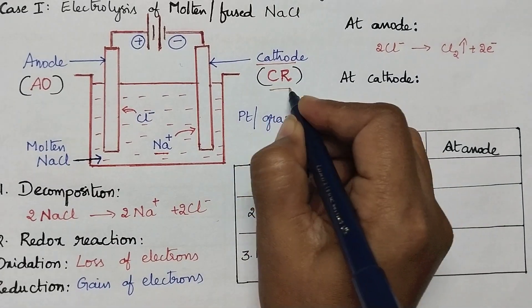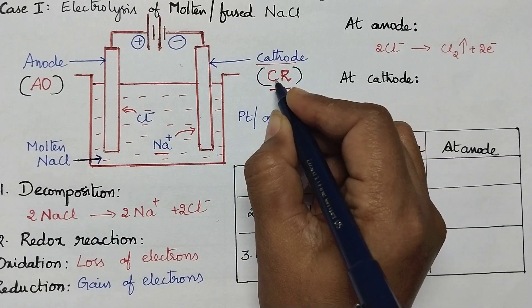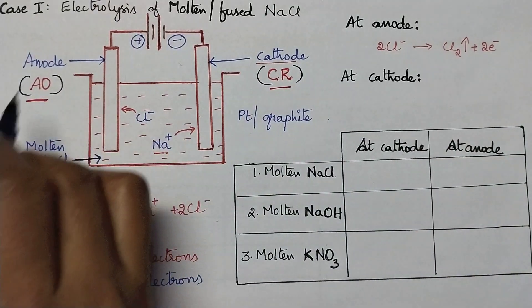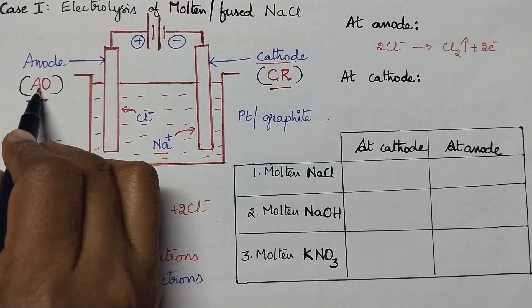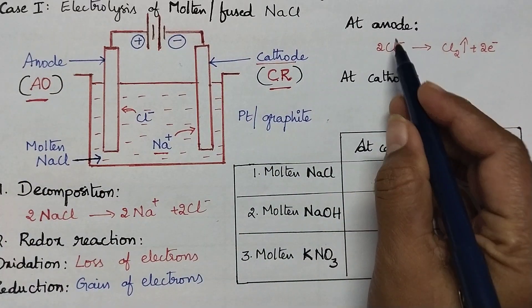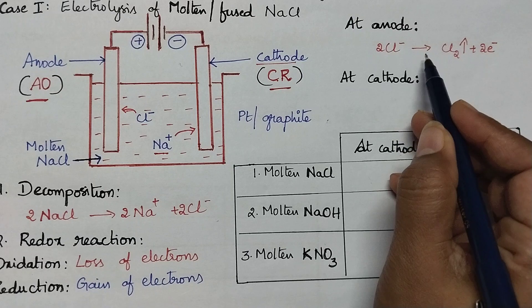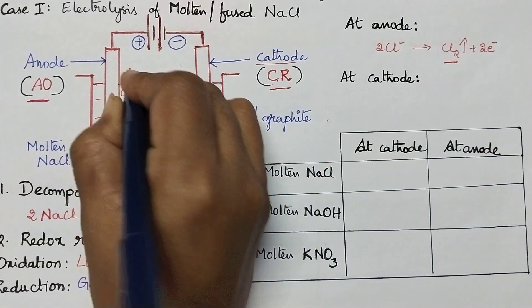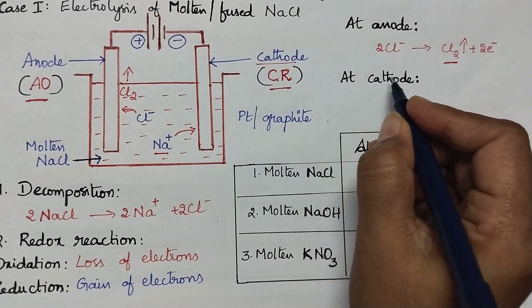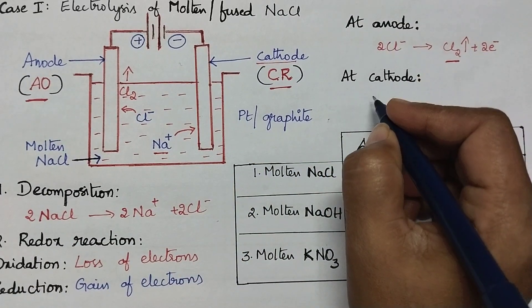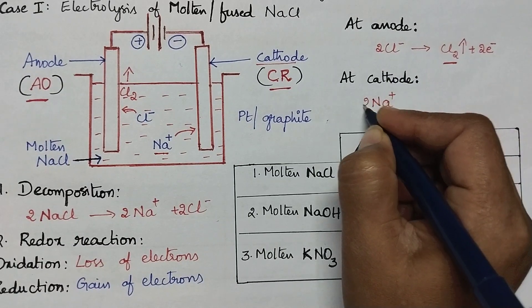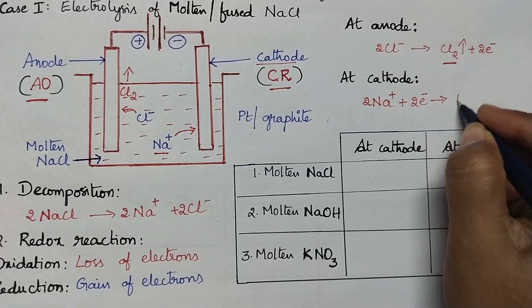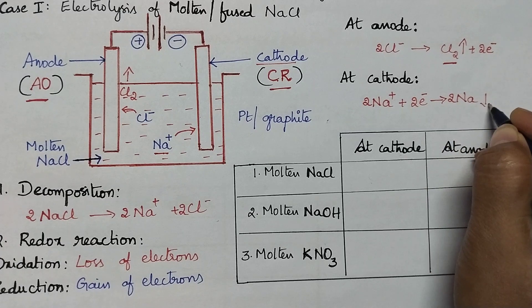Always remember that at the cathode, reduction takes place. CR stands for reduction takes place at the cathode and oxidation takes place at the anode — AO stands for oxidation takes place at the anode. So here at the anode, the chloride ions are undergoing oxidation and that results in the liberation of chlorine gas. At the cathode, cations are present. These cations, that means the sodium ions, undergo reduction by the gain of electrons, resulting in the formation of sodium metal.